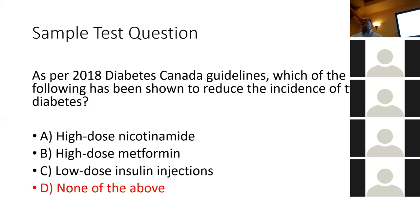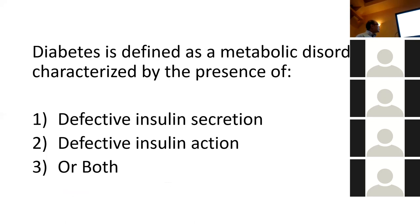With type 1 diabetes, we're not exactly sure what triggers it. For some reason, people with type 1 diabetes have an immune system that attacks their own pancreas, destroying their beta cells. Without beta cells, you don't have any insulin production. So type 1 diabetes is mostly a problem with defective insulin secretion — they're not producing any insulin, so they have diabetes.